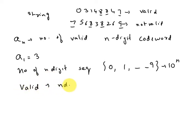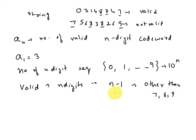A valid string of n digits can be obtained by appending a digit other than 7, 8, or 9 to a valid string of n minus one digits. This is because if the (n-1)-digit code is already valid, it already contains an odd number of 7s, 8s, and 9s, so we must add a digit from the remaining seven to keep it valid.